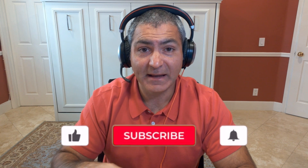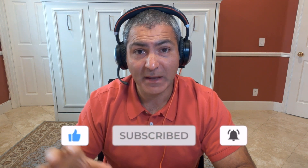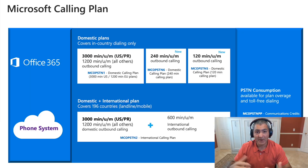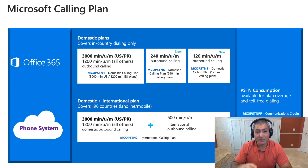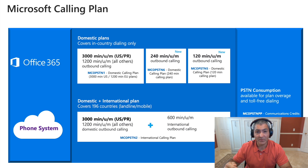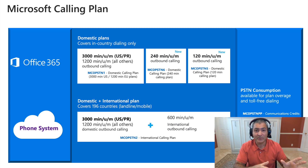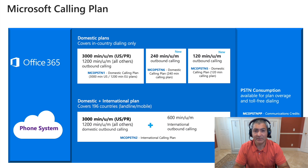The next thing you need to select is the right calling plan for your users and organization. Looking at this chart, Microsoft has several different calling plans — some focused on domestic and one that is international. The domestic ones range in how many minutes per user per month you get: 120, 240, or 3,000. The international plan offers 3,000 domestic minutes and 600 international minutes covering 196 countries. You can mix and match these plans, so look at your consumption, figure out how many minutes you expect to use per month, and get the right plan.